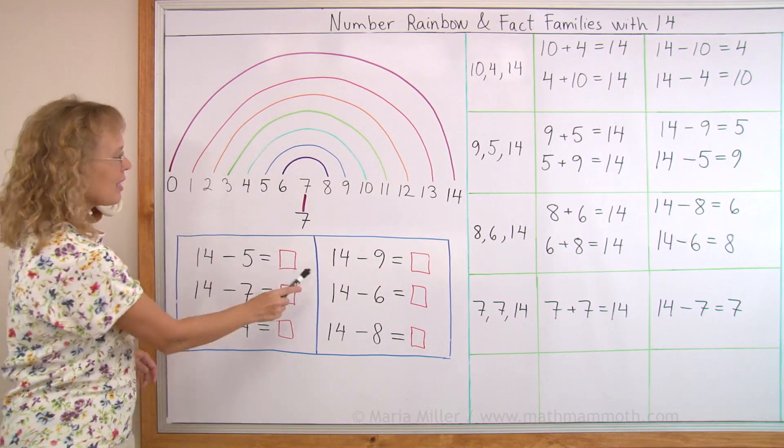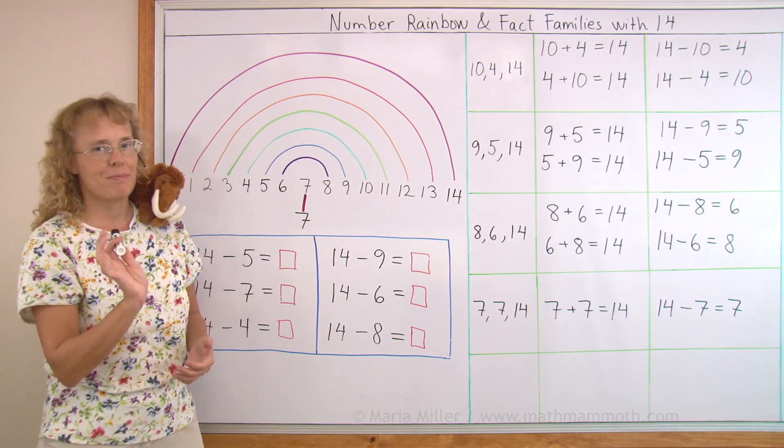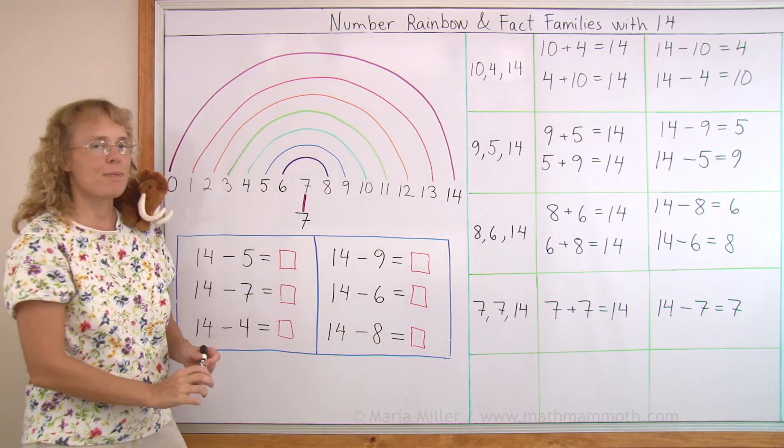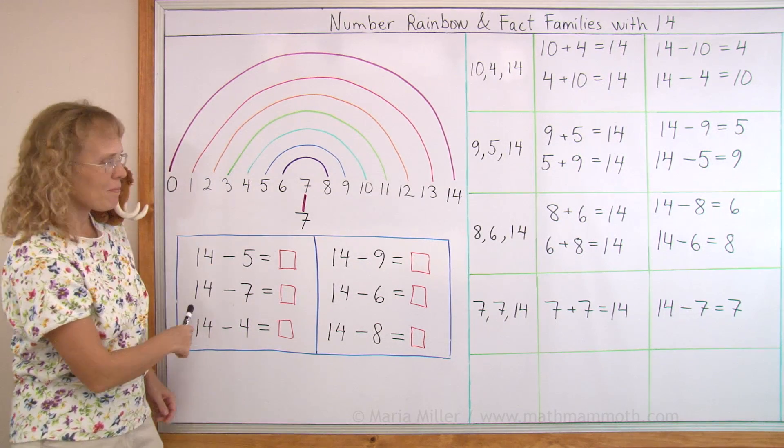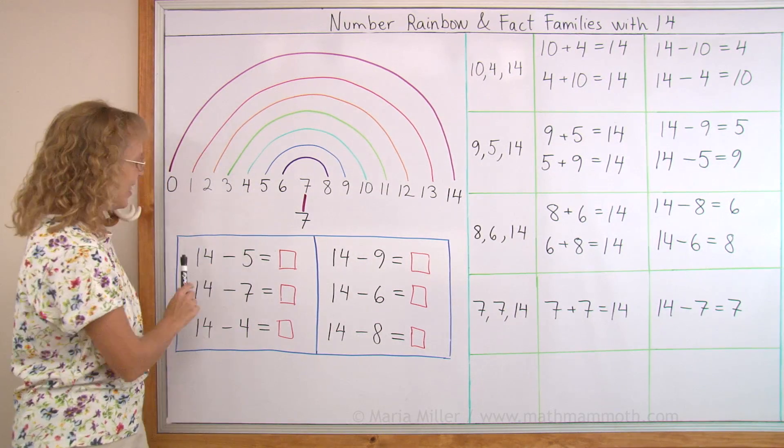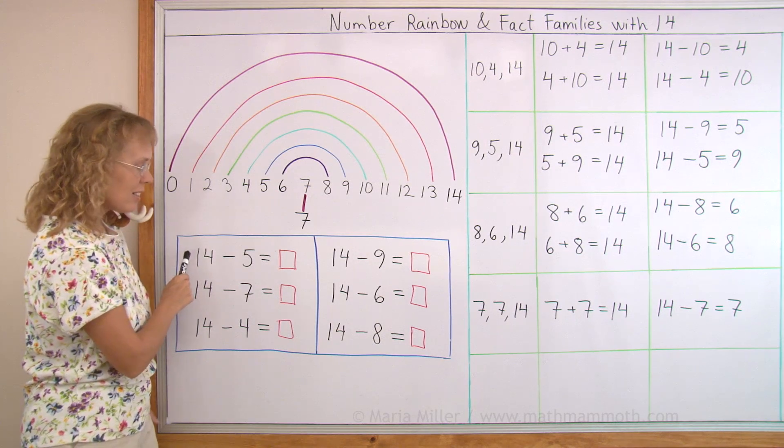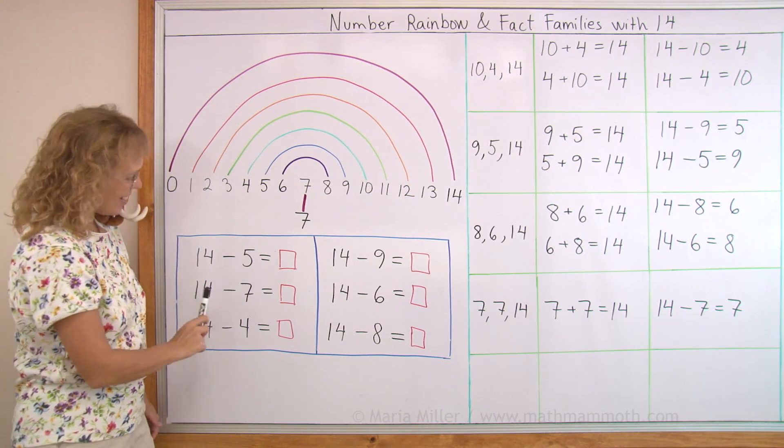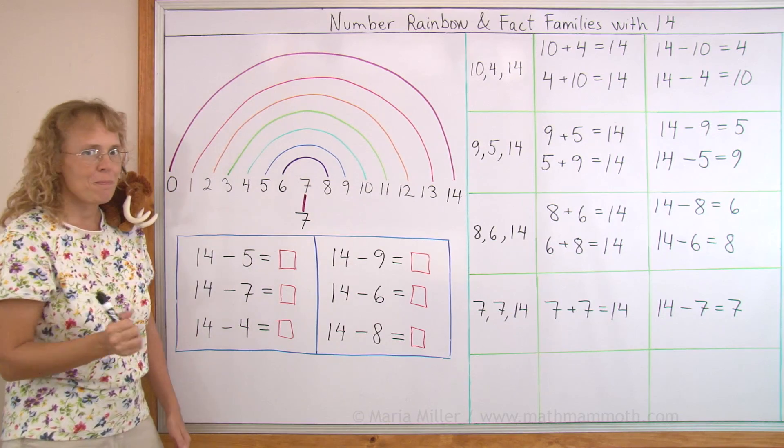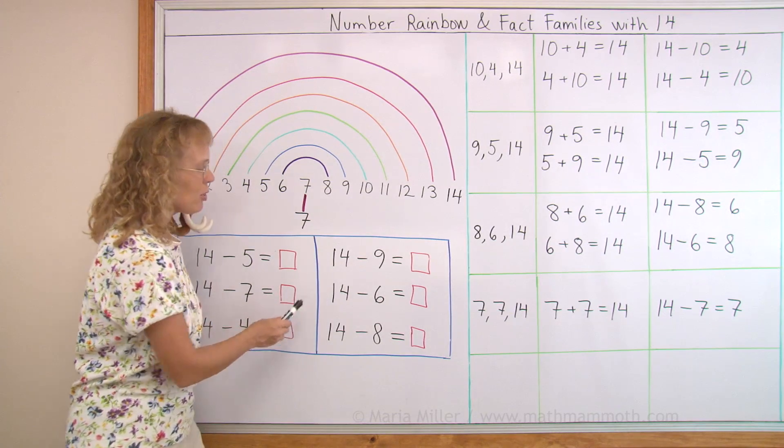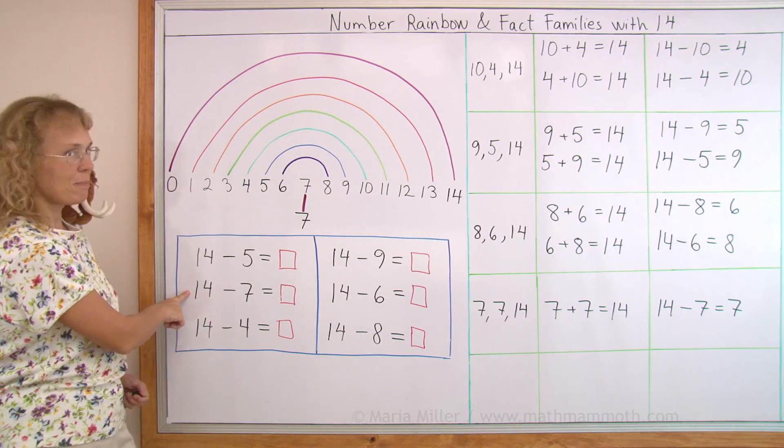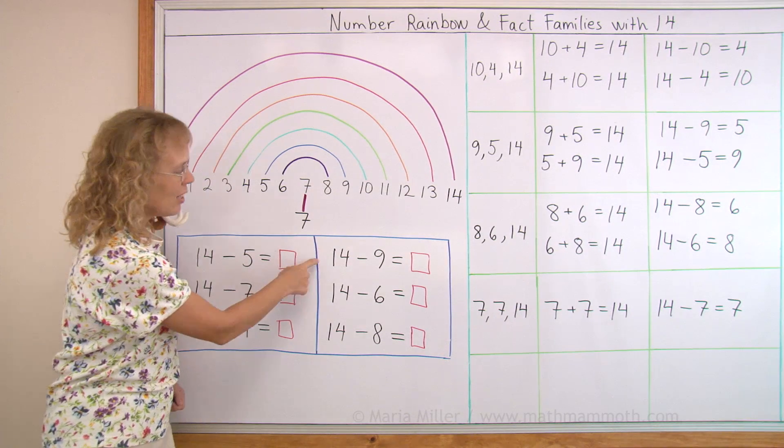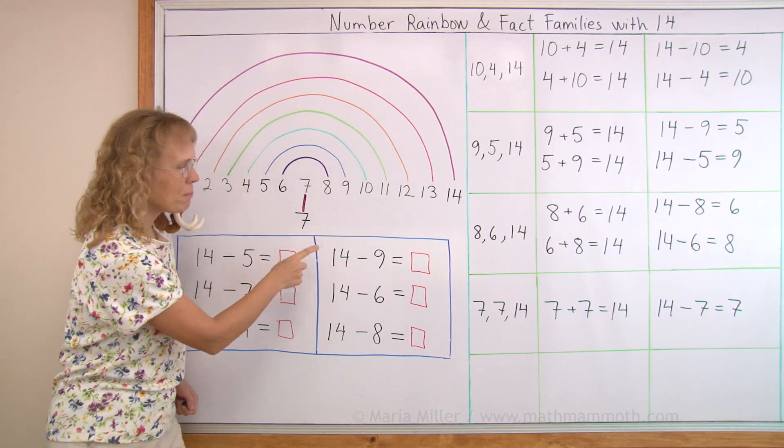Ready for the drill? 14 minus 9, 5. 14 minus 8, 6. 14 minus 4, 10. 14 minus 5, 9. And 14 minus 7, 7. 14 minus 6, 8. 14 minus 8, 14 minus 9, 5.